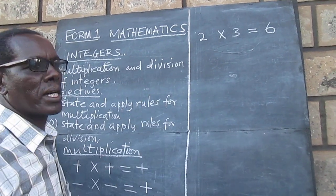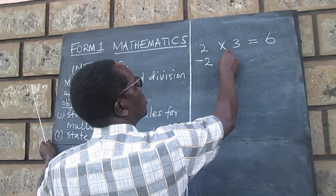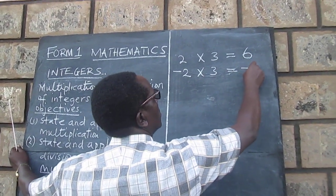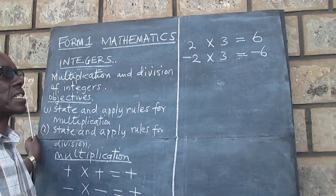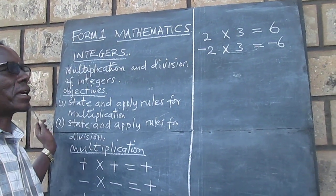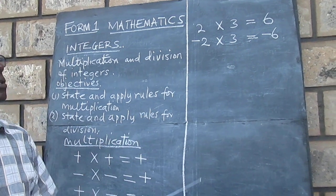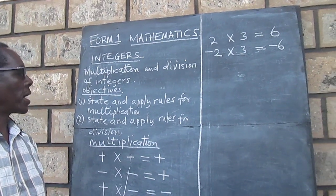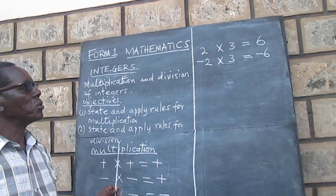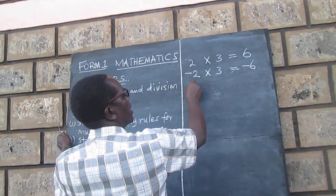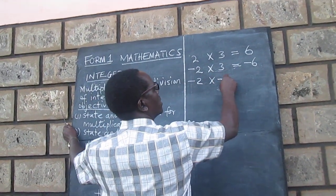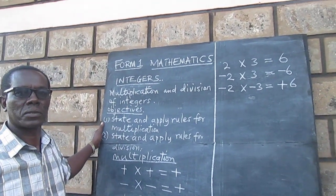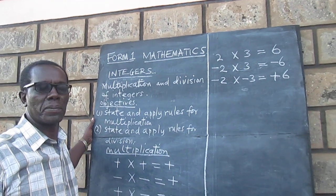If we use the same numbers and now we had negative 2, negative 2 multiplied by positive 3 will give us negative 6 — that was our rule number 3. And for rule number 2, if we had negative 2 multiplied by negative 3, we would end up with positive 6. Those are good examples for multiplication.